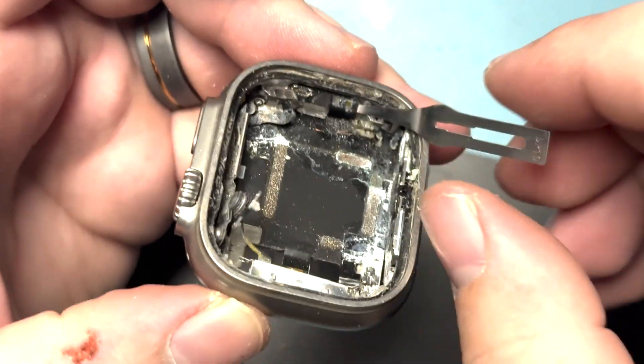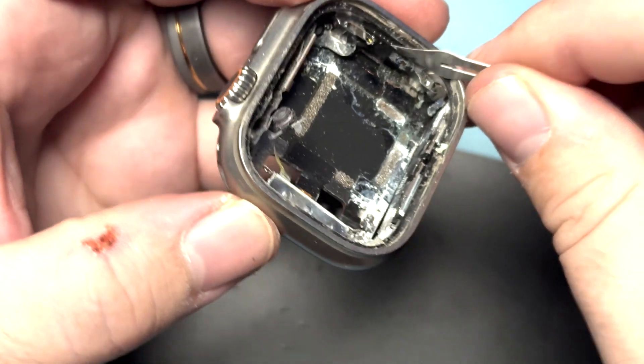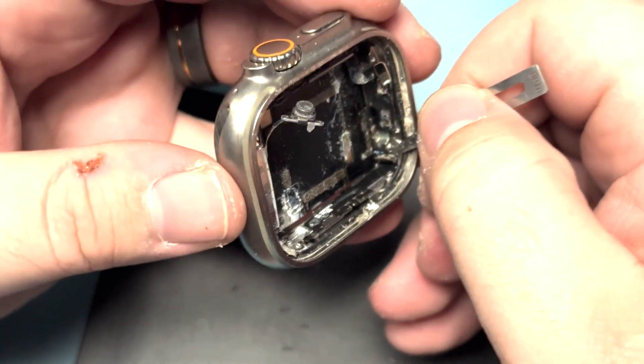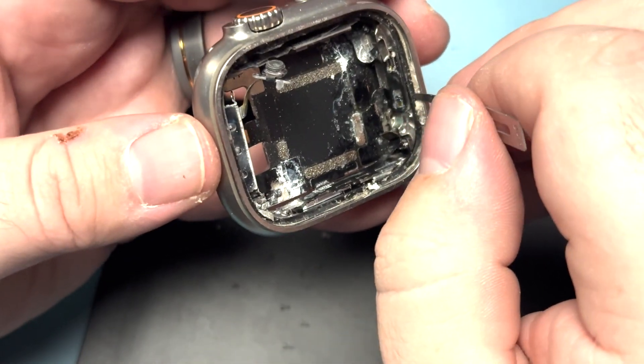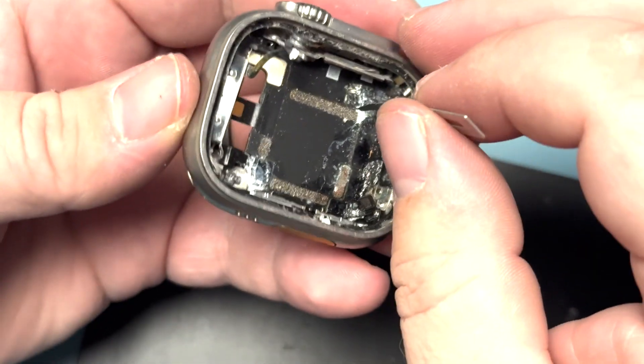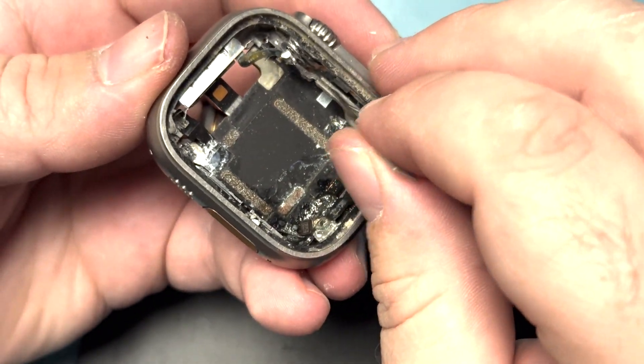There's a bunch of flex cables and brackets that you need to be aware of on this model more than on previous Apple watches. One of the nice parts about the model though is that the motherboard has very little surface components exposed. The ones that are exposed are the connectors.